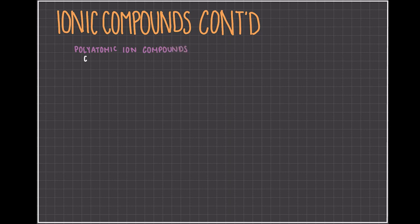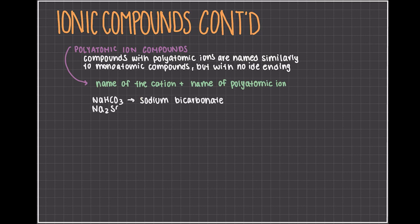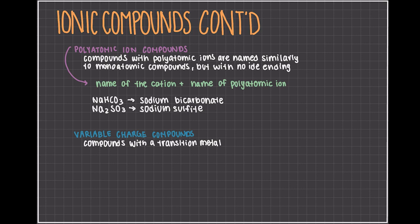Compounds with polyatomic ions are named similarly to monatomic compounds, but with no 'ide' ending. You name it by first stating the name of the cation, and then the name of the polyatomic ion. NaHCO3 would then become sodium bicarbonate, and Na2SO3 would become sodium sulfite. These ones are pretty simple because you just name the cation first, and then you just say the name of the polyatomic ion. For compounds with a transition metal that has different charges, they are named by different rules.